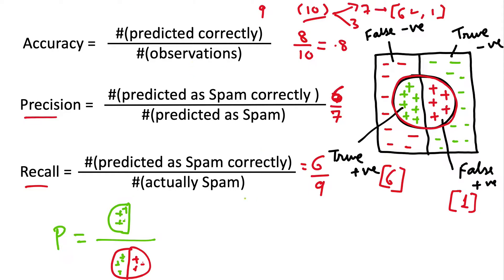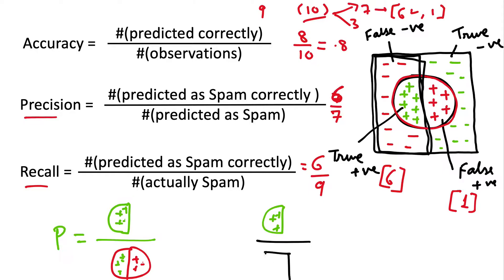The numerator remains the same for recall, but the denominator changes. For recall, the denominator is the total number of messages that are actually spam — that is, the portion of the dataset that should have been labeled spam. This is represented by the left half of the rectangle in the diagram.